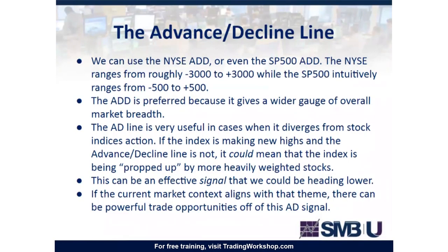Let's dive into the technical aspects of the advance-decline line. We can use the NYSE ADD, which covers all stocks in the New York Stock Exchange, or the S&P 500 ADD. I prefer the NYSE one because it's a wider gauge of the overall market — it ranges from roughly negative 3,000 to positive 3,000 depending on how many stocks are trading, versus negative 500 to positive 500 for the S&P version. The ADD is very useful in cases of divergences from stock index action. If the index is making new highs and the advance-decline line is not, it could mean the index is being propped up by more heavily weighted stocks — a potential signal we could be heading lower.